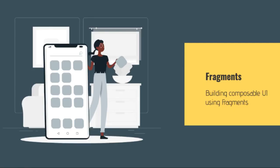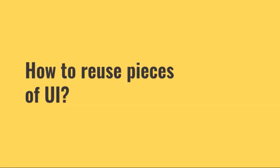So what exactly are fragments? A simple way to describe fragments is a means of reusing pieces of user interface. In our weather app, we have a screen with an icon, a label, and an edit text to enter the zip code. If we wanted to reuse that on multiple screens, rather than re-implementing it from scratch, we could put all that UI and logic into a fragment.